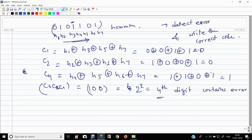So, this is our 4th digit. We need to complement 1 to 0 and 0 to 1. So, this will be our correct code. 0, 0, 1, 0, 1. This will be our correct code.